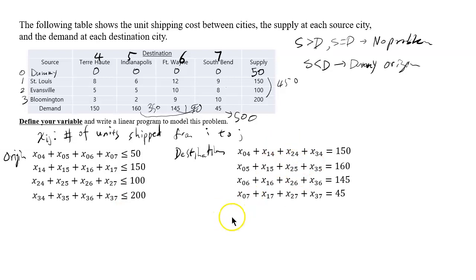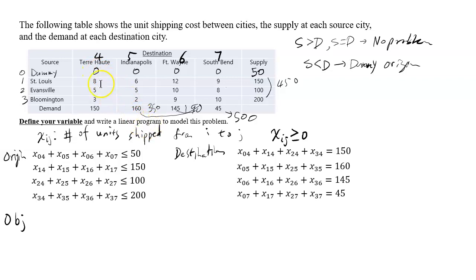You also need to add that Xij is non-negative. I usually put that right after I define the variables — Xij should be non-negative. And then there should be the objective function. The objective function is the cost of the entire supply. When you write down the objective function, it's important to write down all the dummy variables with 0 as a coefficient, although it doesn't really do anything.